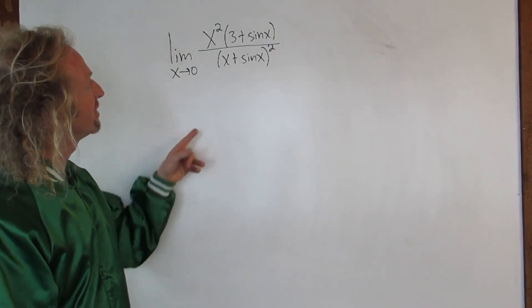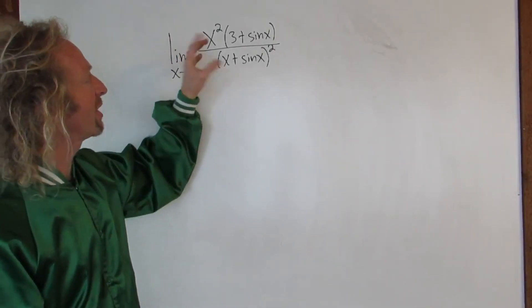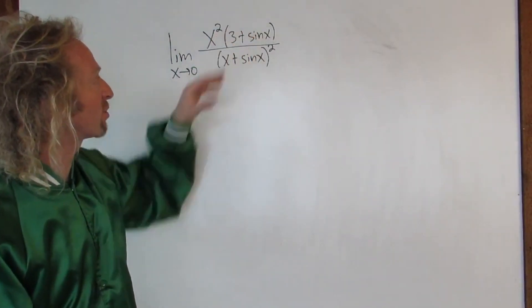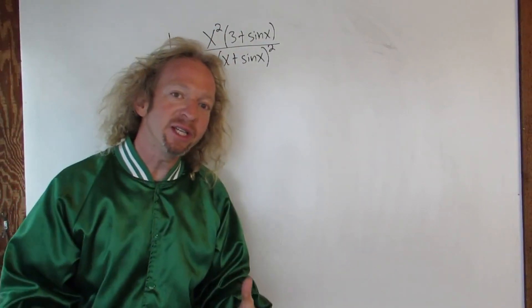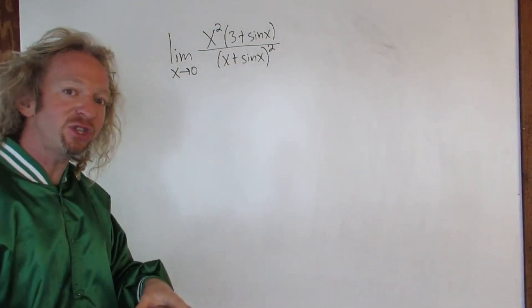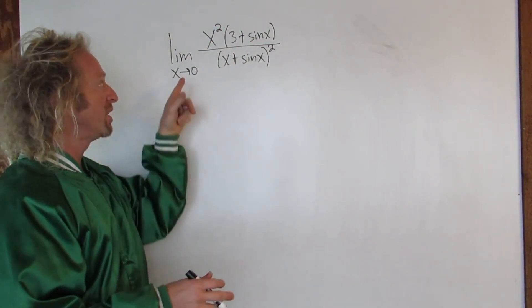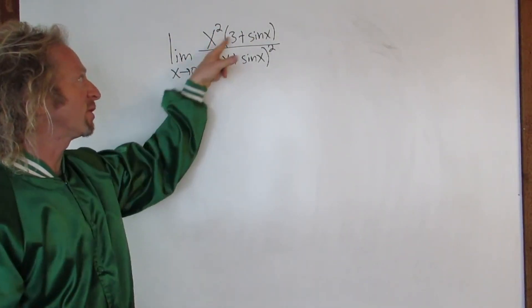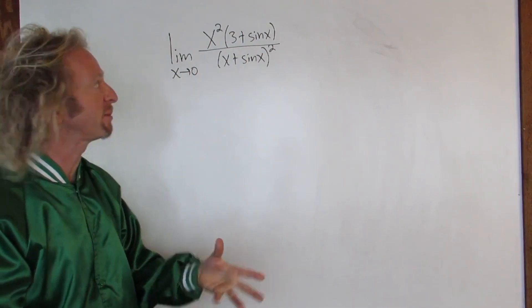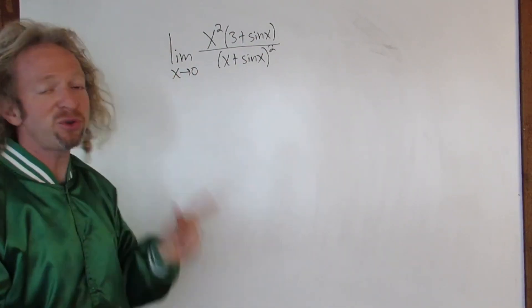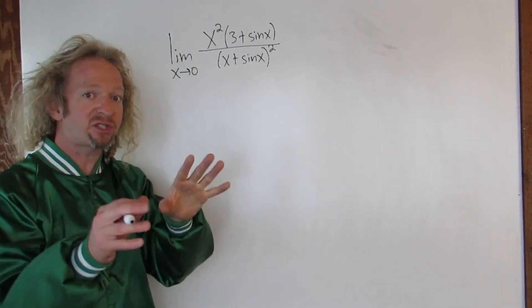The limit is as x approaches zero of x squared times this creature here. So normally when you're taking limits, the first thing you want to do is plug in that number and see what happens. So if we do that in this case, let's do it.